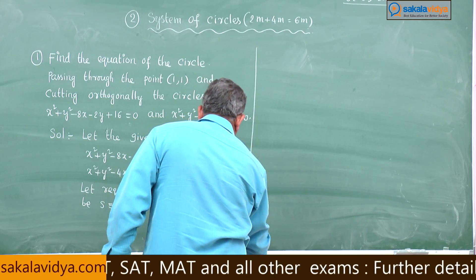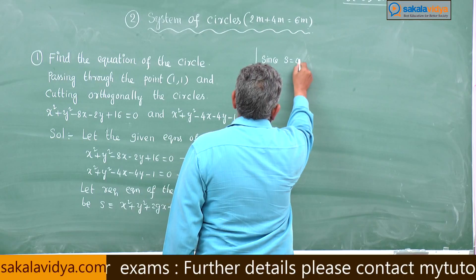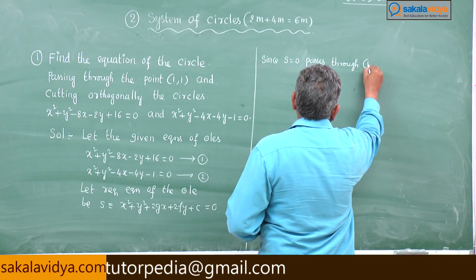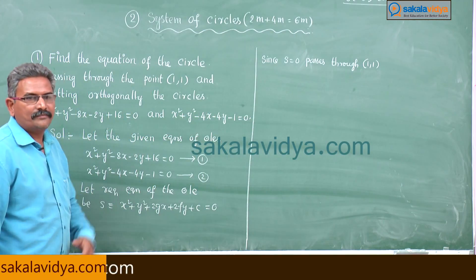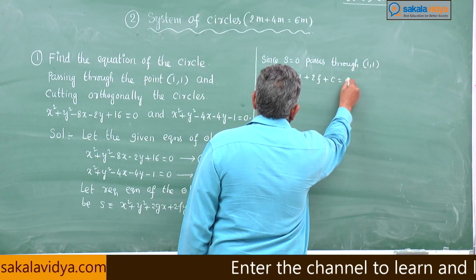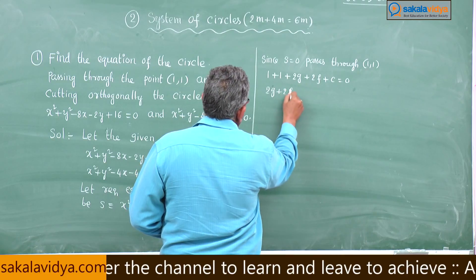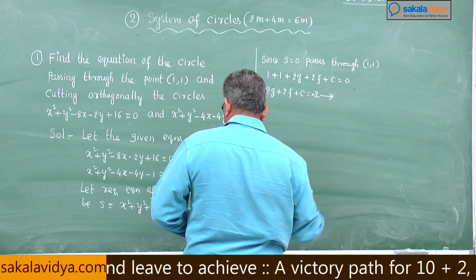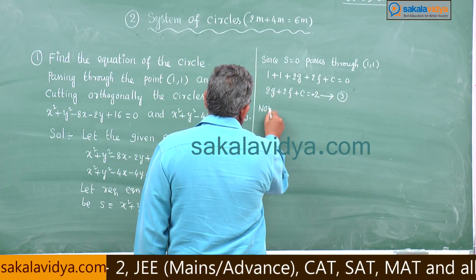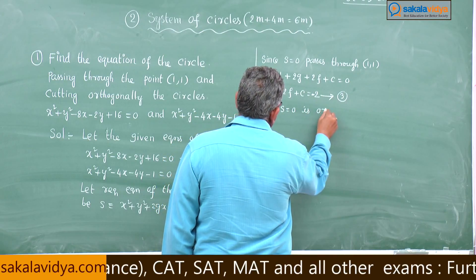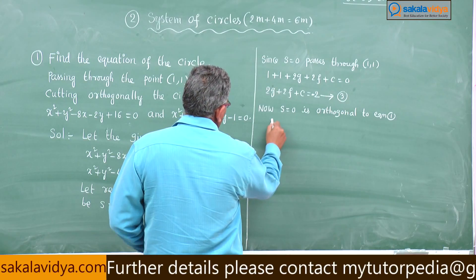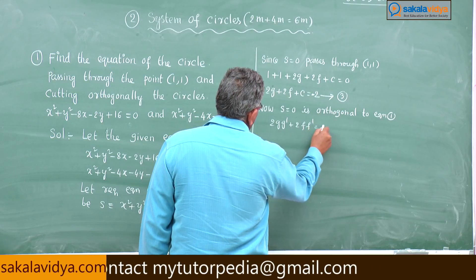Since S = 0 passes through 1 comma 1, the point 1 comma 1 satisfies the general equation. So we get 1 + 1 + 2g + 2f + c = 0, giving 2g + 2f + c = −2. Call this equation 3. Now, S = 0 is orthogonal to equation 1. The orthogonality condition is: 2g·g' + 2f·f' = c + c'.